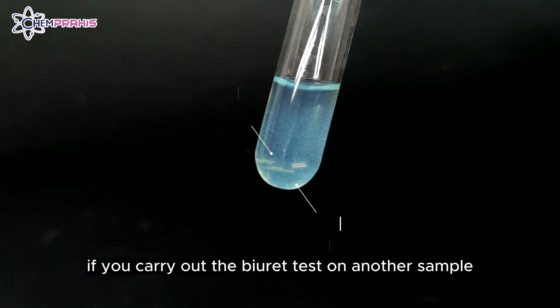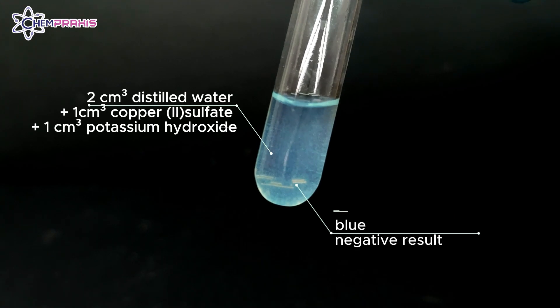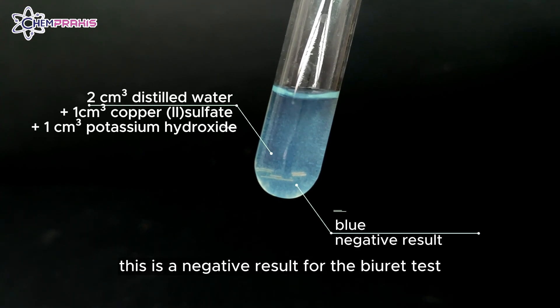If we carry out the biuret test on another sample that does not contain protein, the solution will turn blue. This is a negative result for the biuret test.